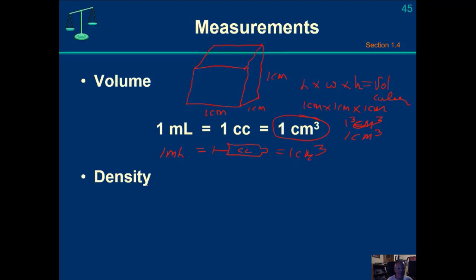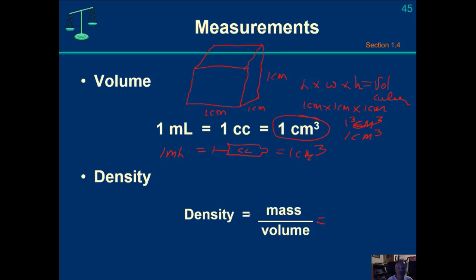Let's talk about density. Density is a ratio of mass per unit of volume. Typically with most solids and liquids, we measure this intensive property. Density is an intensive property — it does not change with the amount — and it's a ratio of two extensive properties. Both mass and volume are extensive. So the units on density for solids and liquids will generally be grams per milliliter.